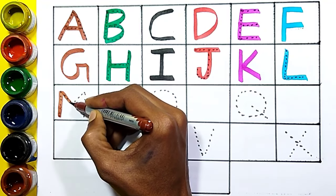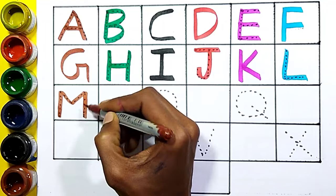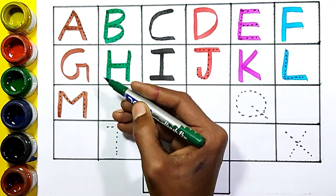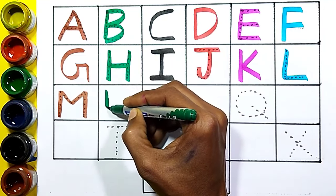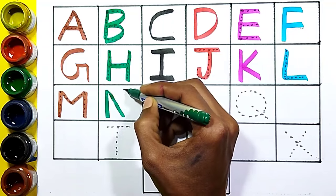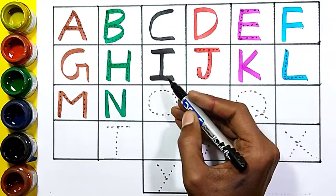M, M for mango, green color. N, N for nest, black color.